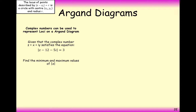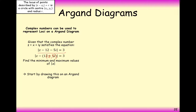For the next problem: for the set of complex numbers |z - 12 - 5i| = 3, find the minimum and maximum values of |z|. This means: draw the locus and find the maximum and minimum distances from the origin (0, 0) to any point along that locus. The centre is at (12, 5) and the radius is 3 — those are all the complex numbers with distance 3 from the point (12, 5).